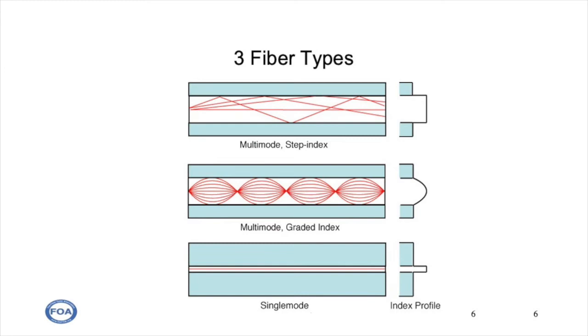Single-mode fiber is simply a small enough core that it only propagates one mode of light, and we'll look at how each of these work in animations that follow.